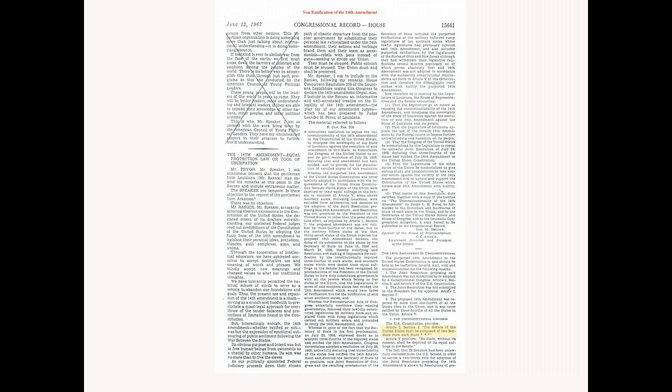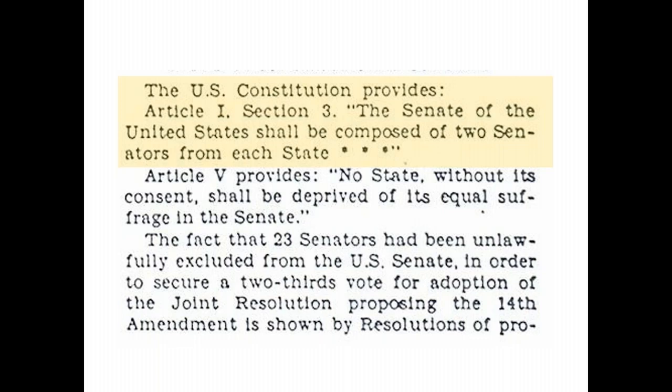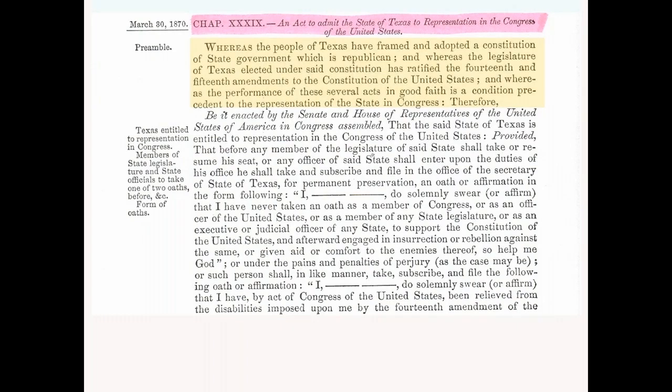In short, we left nothing undone that the government, acting through the President, demanded of us, but still our constitutional representation is denied us. They were denied representation on voting for the Fourteenth Amendment, and then they were told the state legislators had to ratify it. In violation of the Constitution, as the Congressional record points out, Article 1, Section 3 — the Senate of the United States shall be composed of two senators from each state. That doesn't mean exclude 23 of them because they won't vote for your bill because they find it unconstitutional.